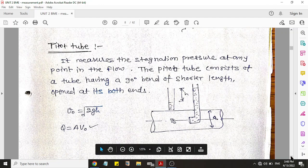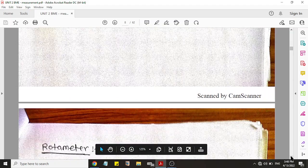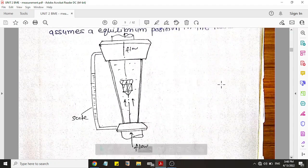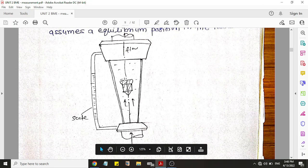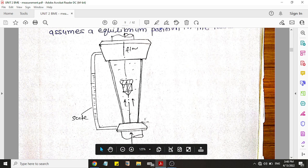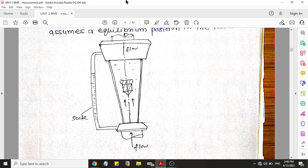And the last method is rotameter. You can see the diagram of rotameter. In rotameter you can see the float. And this method is used in the vertical pipe when flow is in the vertical direction.